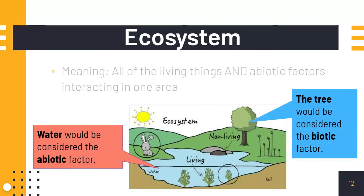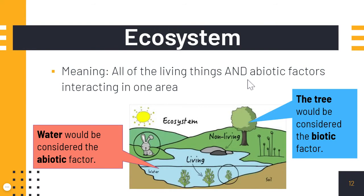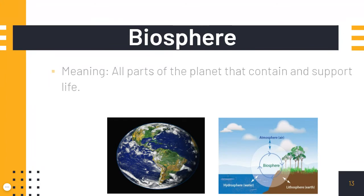An ecosystem includes all living things and also the abiotic factors as well as the biotic factors. So it would be the rabbit living near the water and the tree, in that temperature where the sun is — that's an ecosystem. And the biosphere includes all parts of the planet that contain and support life. Our example: the earth.